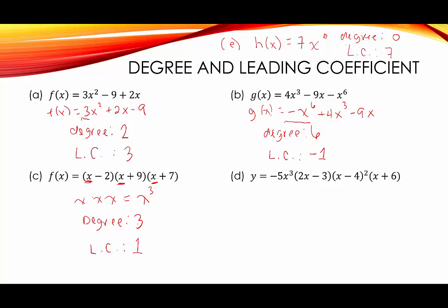Lastly in letter d, we have y = −5x³ · (2x − 3) · (x − 4)² · (x + 6). We're going to take the terms containing the largest exponent of x in each factor and multiply. So we have −5x³ times 2x, then (x − 4)² gives us x², then times x from the last factor. Multiplying this all together gives us −10x^(3+1+2+1) = −10x⁷. So this is a degree 7 polynomial and the leading coefficient is −10.